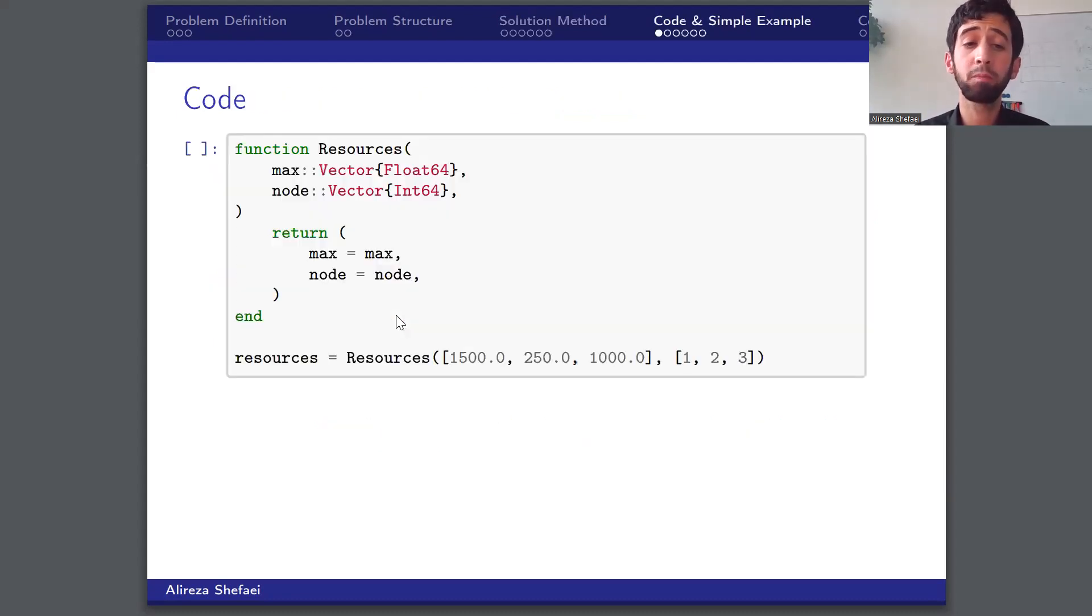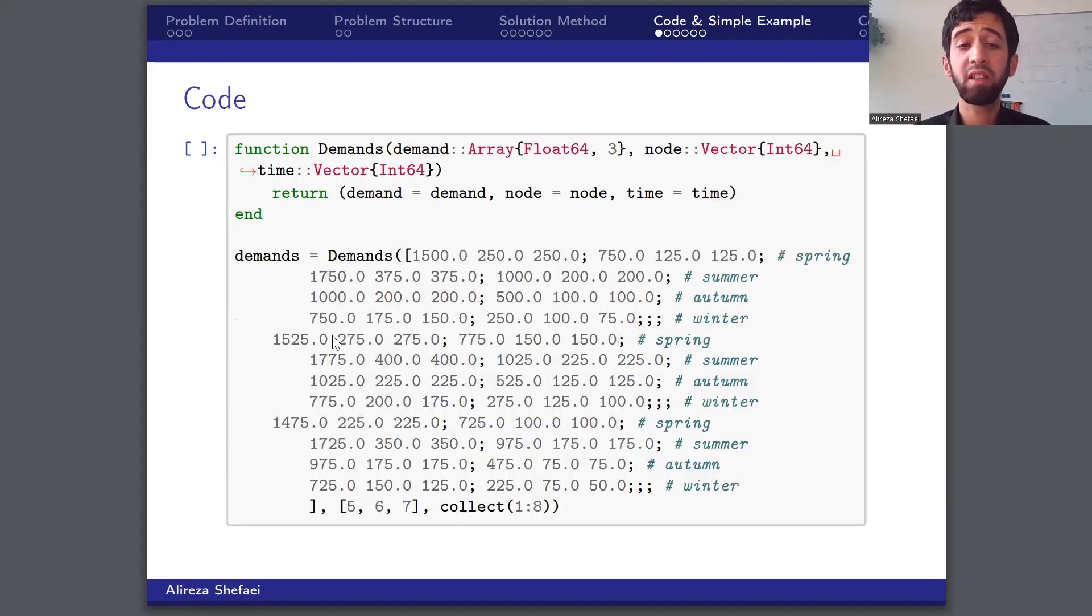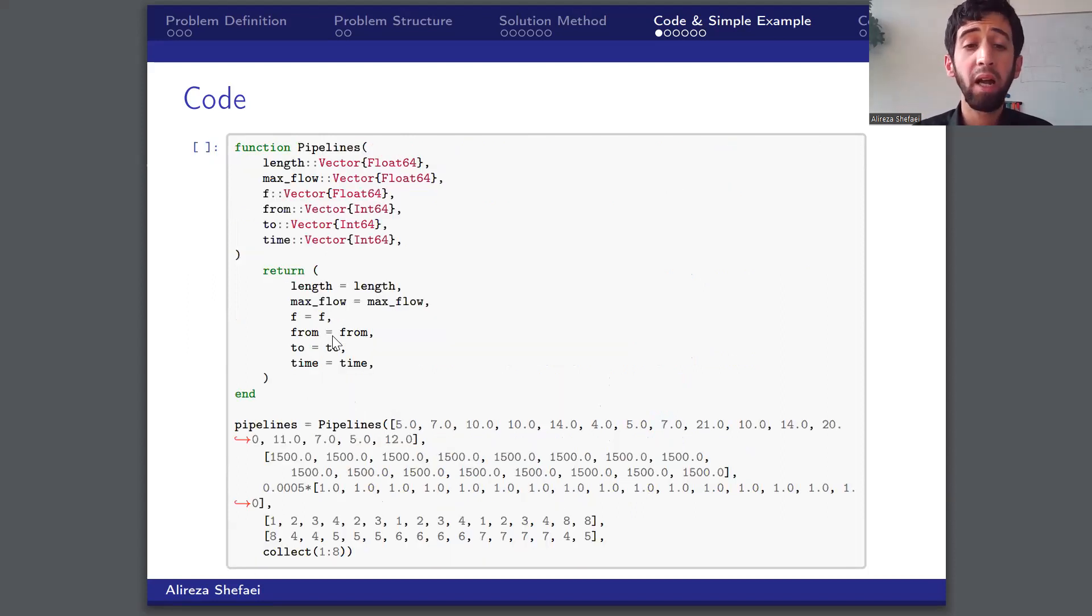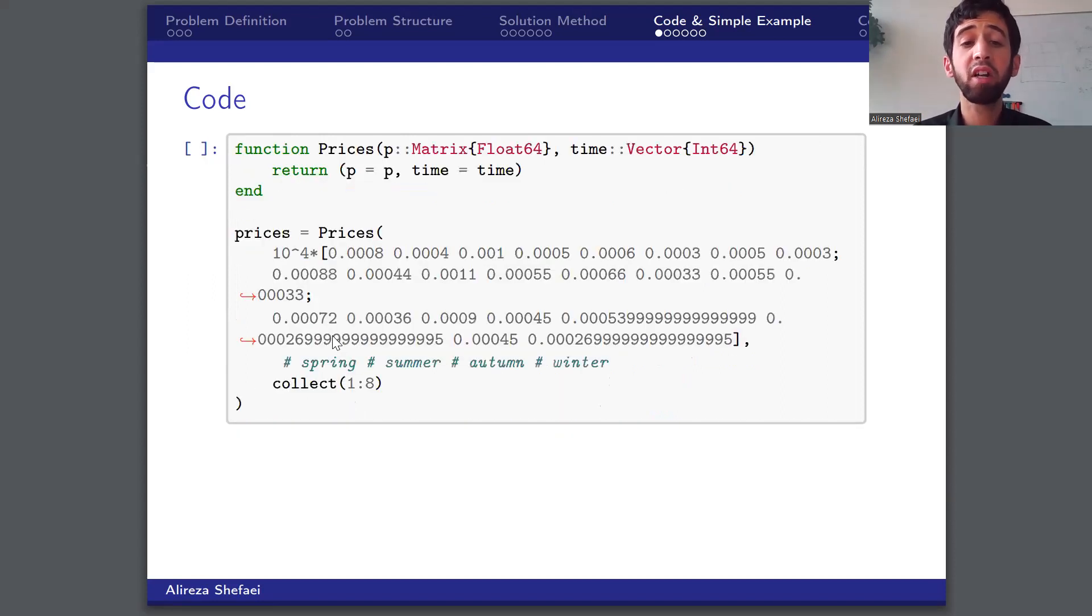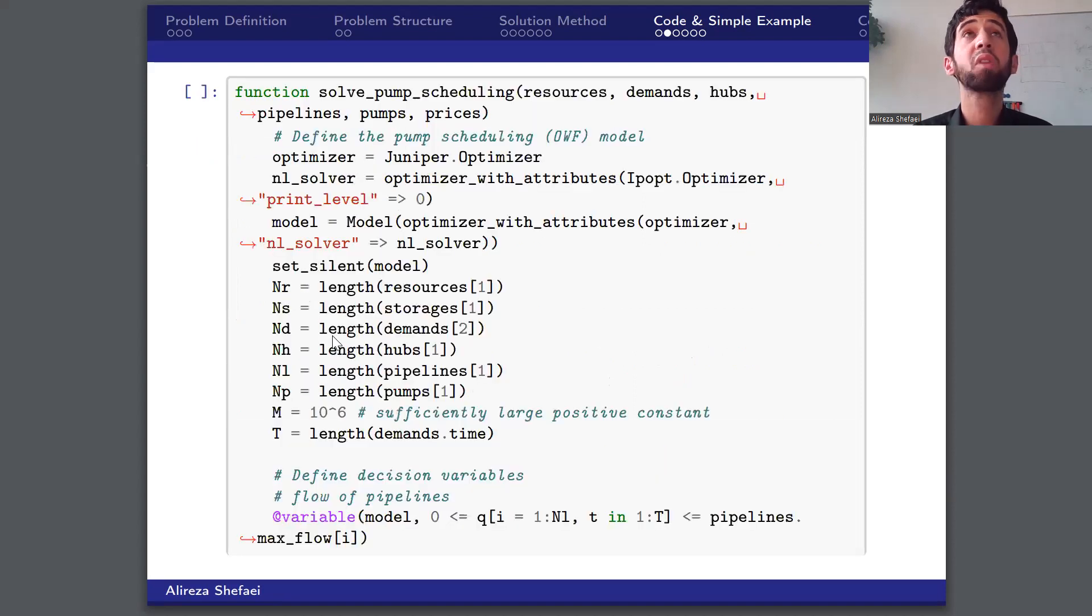In the written code, the input data for all junctions and branches are defined as functions. For example, for resource demand with the corresponding scenarios, pipelines, and electricity price scenarios. Then we fit them into our model.